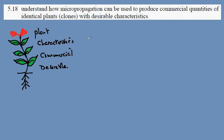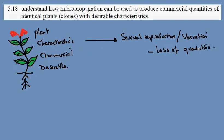However, there are two ways of doing this. One is sexual reproduction, but that would lead to variation and a loss of the qualities that make it valuable as a commercial plant.